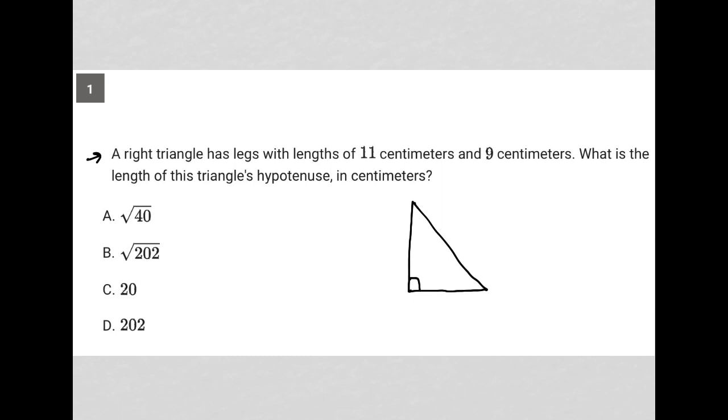So I'm using this strategy called plug-in picture. When I see a question describing something that can be drawn, I like to draw it. A right triangle has legs with lengths 11 centimeters, so I'll just call this one 11, and 9 centimeters, I'll call this one 9.